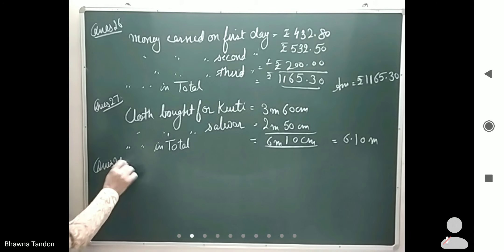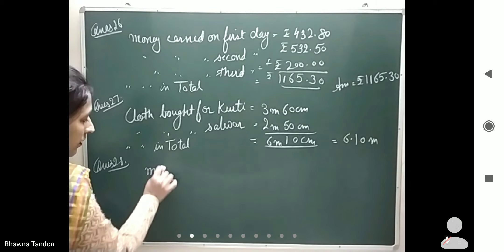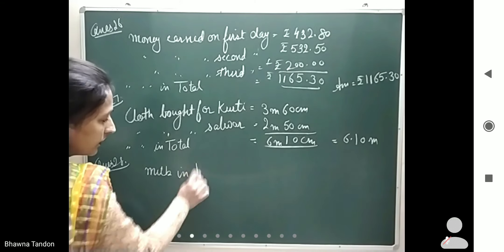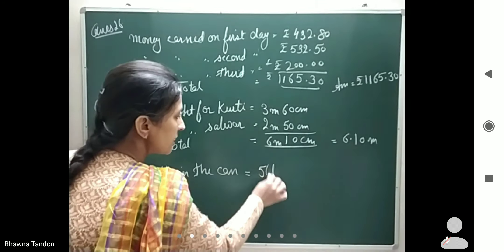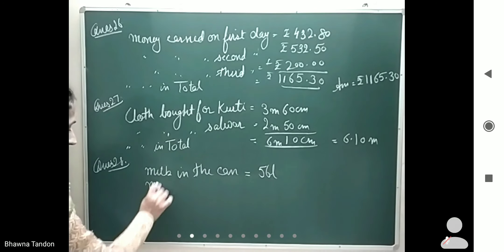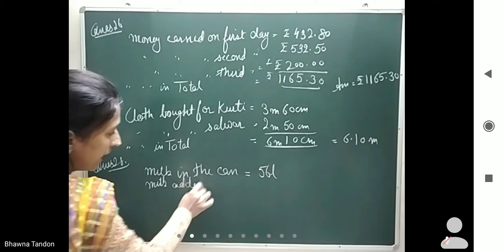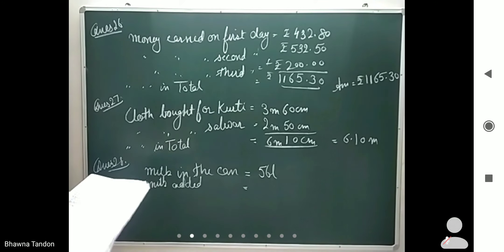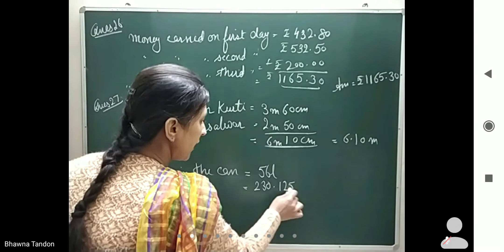Milk in the can earlier was 56 liters. Milk added to it is 230.125 liters.